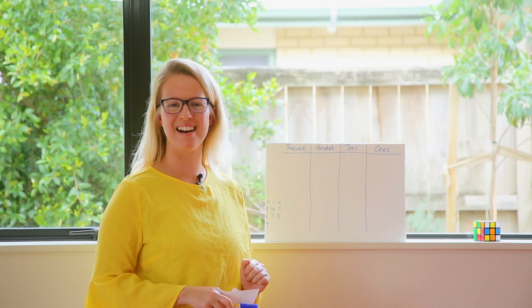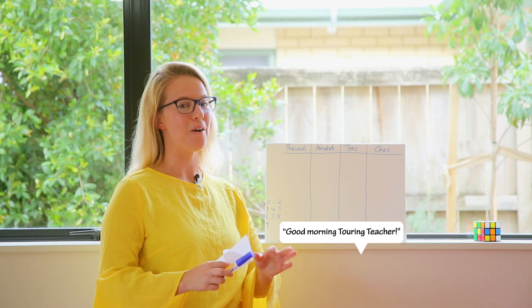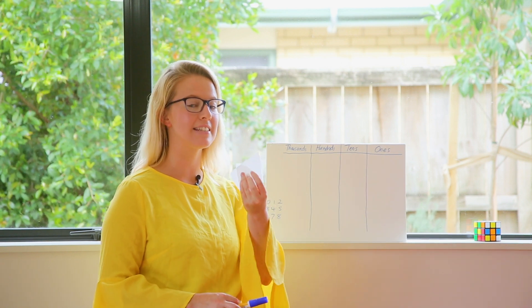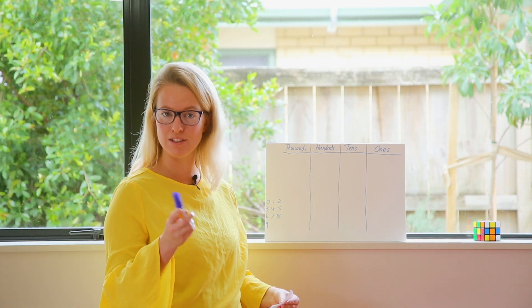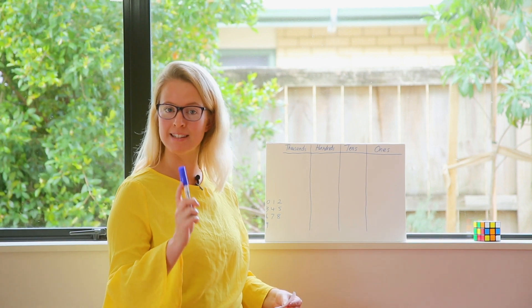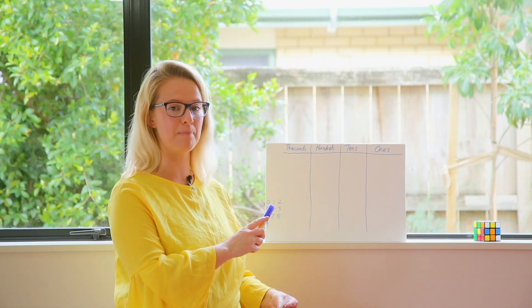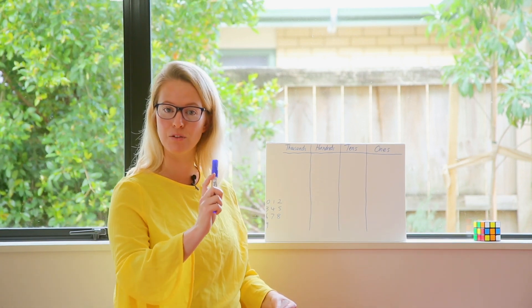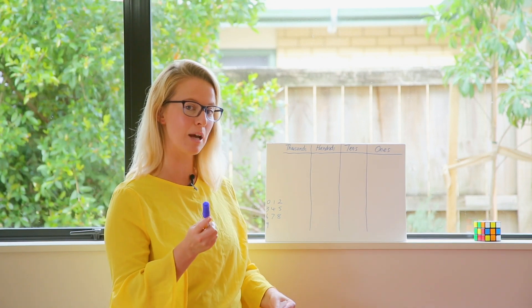Good morning everyone! I have written a secret number on this piece of paper and you need to guess what it is by saying numbers in each column. I'll put a tick if it's in the correct column, a dot if it's the correct number but in the wrong column, and a cross if it's not in my number at all. Let's get started!